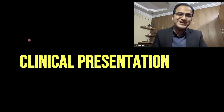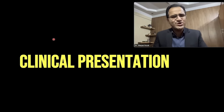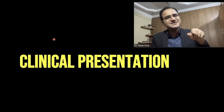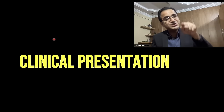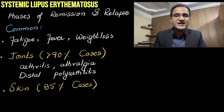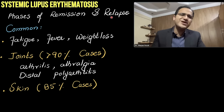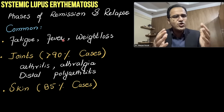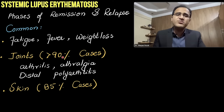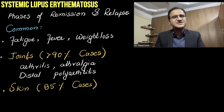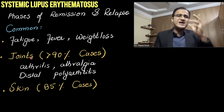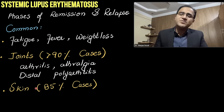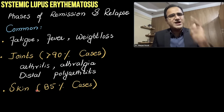Coming to the clinical presentation of SLE — remember SLE is a chronic disease in which the patient always has a baseline disease. The patient can sometimes get exacerbation of the condition, called flares. So the patient has phases of remission and relapse. The most common presentation is constitutional symptoms like fever, fatigue, weight loss, and joint pain. Joints are involved in more than 90% of cases — arthritis and arthralgia — and that is the most common initial presentation, which can be difficult to diagnose. But when skin manifestations appear in 85% of cases, the diagnosis becomes easier.